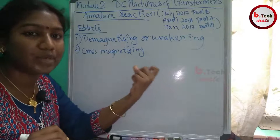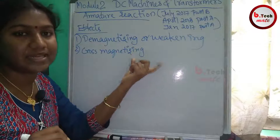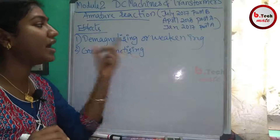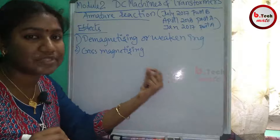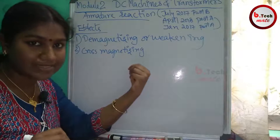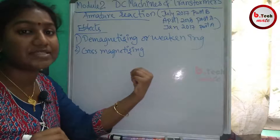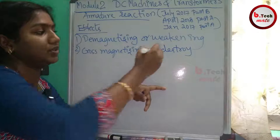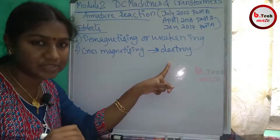The armature flux causes a Demagnetizing effect on the main flux, which reduces the EMF generated. The second effect is Cross Magnetizing, where the armature flux distorts the main field. The armature flux is said to fully distort the field through Cross Magnetizing.